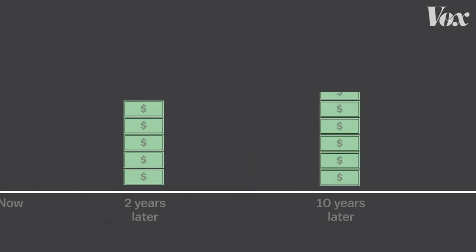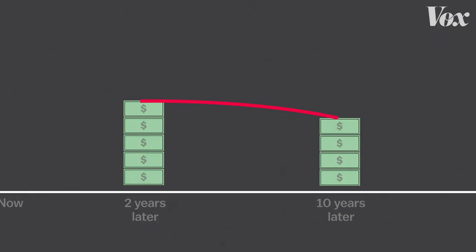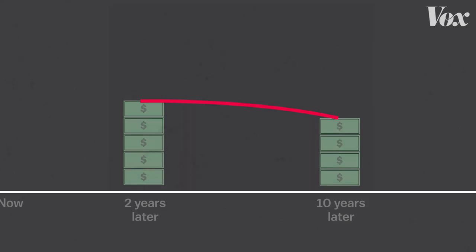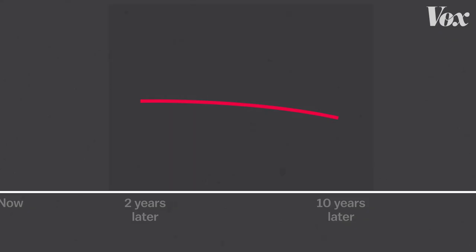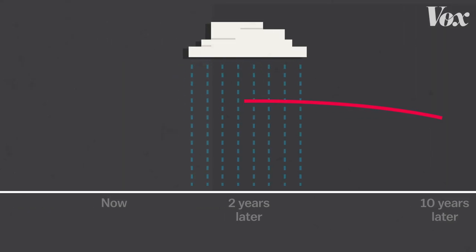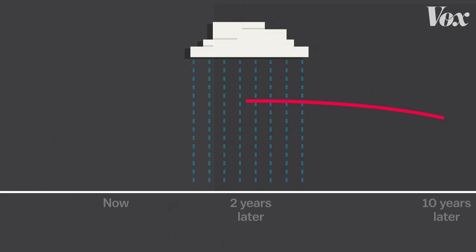And if enough investors are acting on this expectation, the yield on a long-term bond — which is almost always higher than a short-term bond — can actually dip lower. And if you draw that yield curve, you can see that it goes in the other direction. It inverts. In other words, when this chart looks like this, it means investors think an economic downturn is probably coming in the near future.